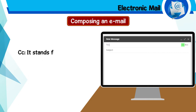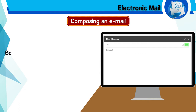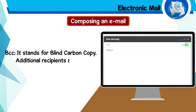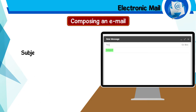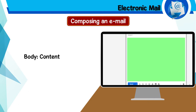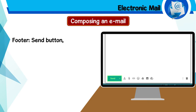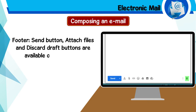CC stands for Carbon Copy — all additional recipients are disclosed to the main recipient. BCC stands for Blind Carbon Copy — additional recipients are not disclosed to the main recipient. Subject: a brief summary of the contents of the message is typed in this box. Body: content is written in the body of the message. Footer: the Send button, Attach Files, and Discard/Draft buttons are available on the footer.